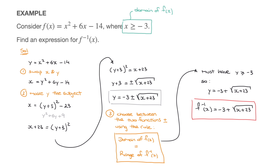And there we go — that's how we find the inverse function of a quadratic function. You can stop watching the video now, but if you're interested, keep watching and I'll spend another minute or two explaining why we were given the domain x greater than or equal to negative 3 in the first place, and show how we could have equally been given the domain x less than or equal to negative 3.